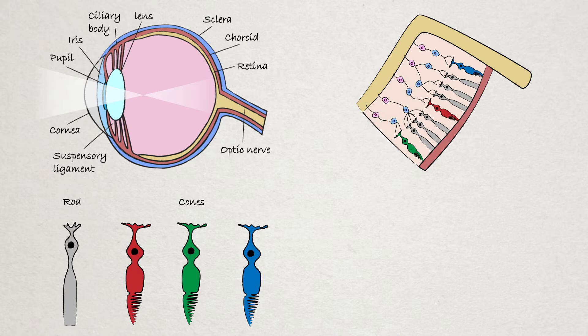Rods have a much lower activation energy than cones and are much more numerous, but do not contribute to our color perception. This is why in low light conditions we can still see things because our rods are still picking up light, but we struggle to make out color, because our cones are not triggering.